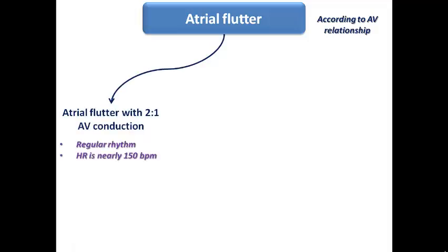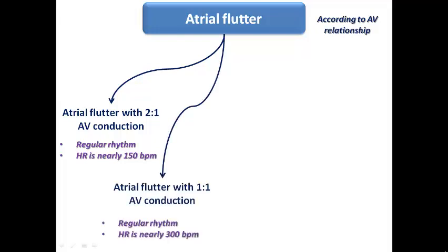Atrial flutter can also be classified according to AV relationship. In 2:1 AV conduction, from every 2 flutter waves only 1 is conducted, giving a regular rhythm with ventricular rate of approximately 150 bpm — half the atrial rate. In 1:1 conduction, less common and seen in younger patients with intact AV nodal conduction, the rhythm is regular with heart rate near 300 bpm, potentially causing hemodynamic instability — a dangerous though uncommon pattern.